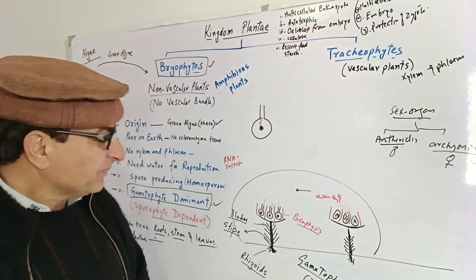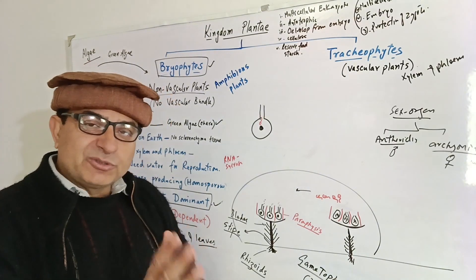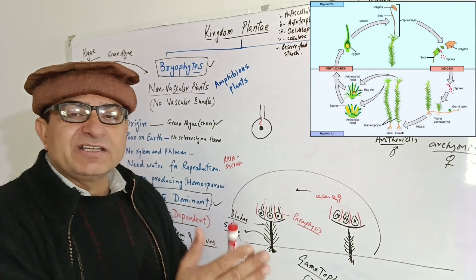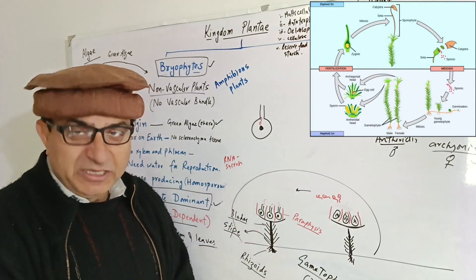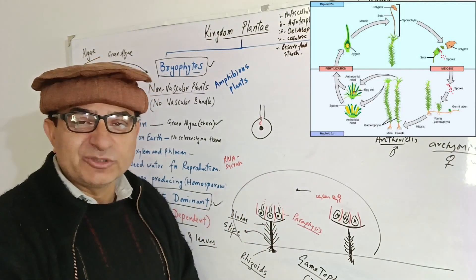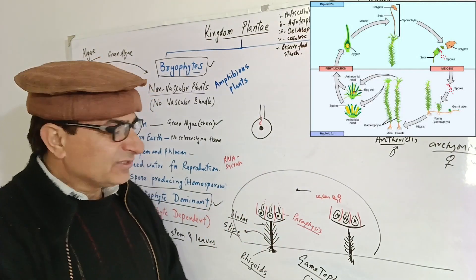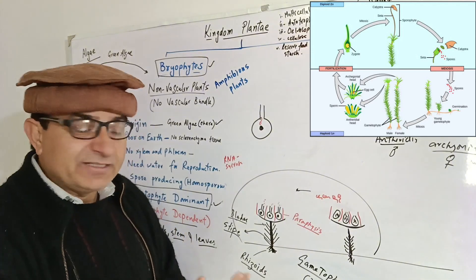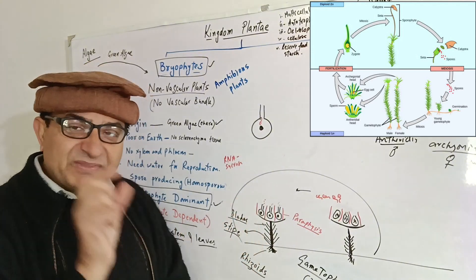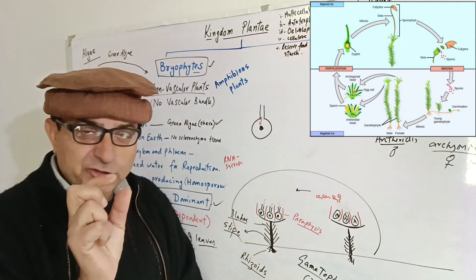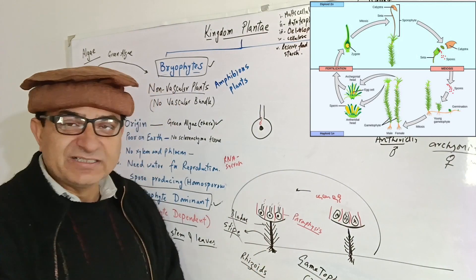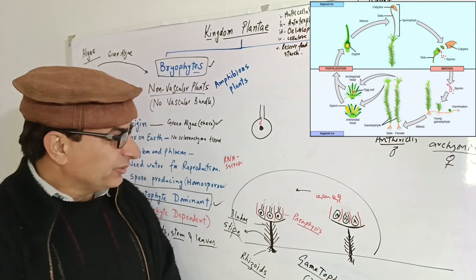This zygote protection is obviously absent in algae — in algae the zygote is already in water so there is no chance of dehydration and protection is not needed. But in terrestrial conditions, the zygote needs to be protected, and it is protected inside the archegonia.